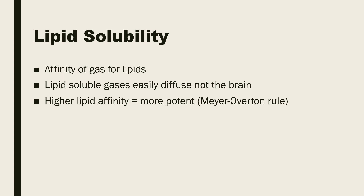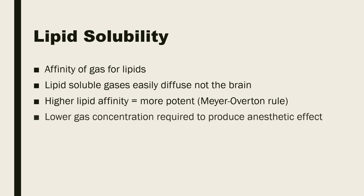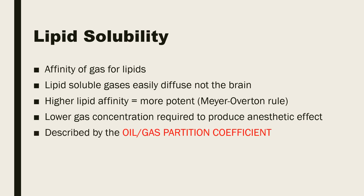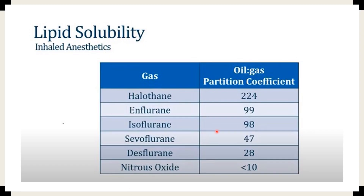When you have a high lipid affinity of a gas, it is more potent, meaning a lower gas concentration will be required to produce an anesthetic effect. One of the ways to describe lipid solubility is by the oil-gas partition coefficient. Shown on this slide is a table with the oil-gas partition coefficient for some inhaled anesthetics. Halothane has a very high oil-gas partition coefficient, meaning it is very potent and you will need a low concentration of halothane to put the patient to sleep. In contrast, nitrous oxide has a very low oil-gas partition coefficient, so you will need a very high concentration of nitrous oxide to achieve anesthesia.